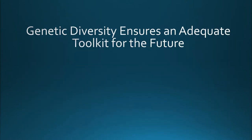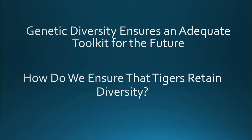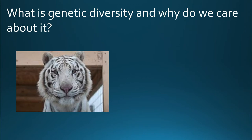So if genetic diversity ensures an adequate toolkit for the future, how do we ensure that tigers are retaining that diversity? First, let me convince you that genetic diversity is important and why we should bring it into the conversation about biodiversity loss. Here is a white tiger. White tigers occur naturally in the wild — it's a genetic variant that causes this white phenotype, though it's extraordinarily rare and only occurs in Bengal tigers in India. However, these tigers are beautiful, and people wanted more of them, so they began to breed very closely related individuals together to get the best chance of producing another white tiger.